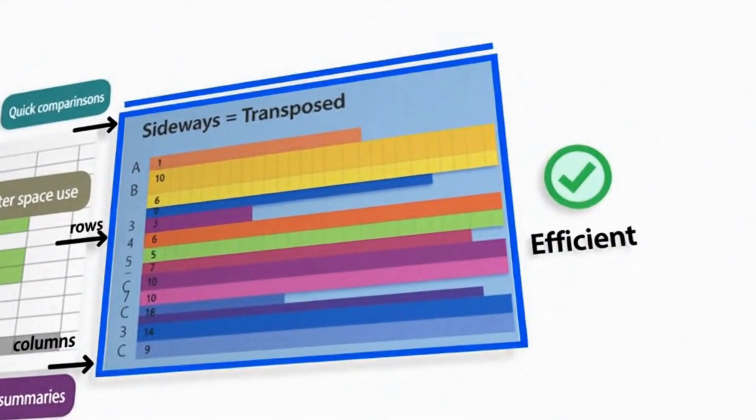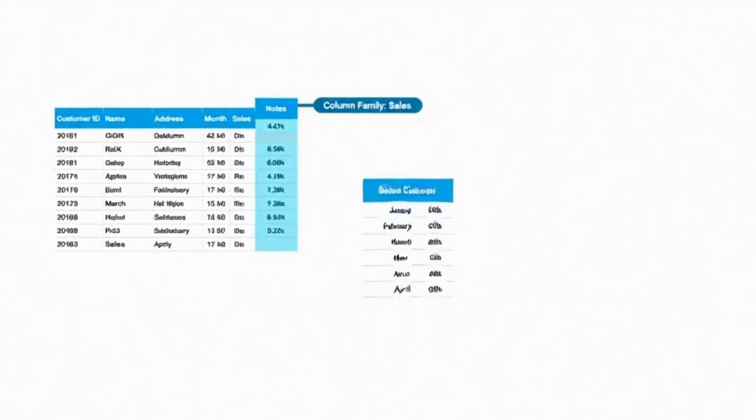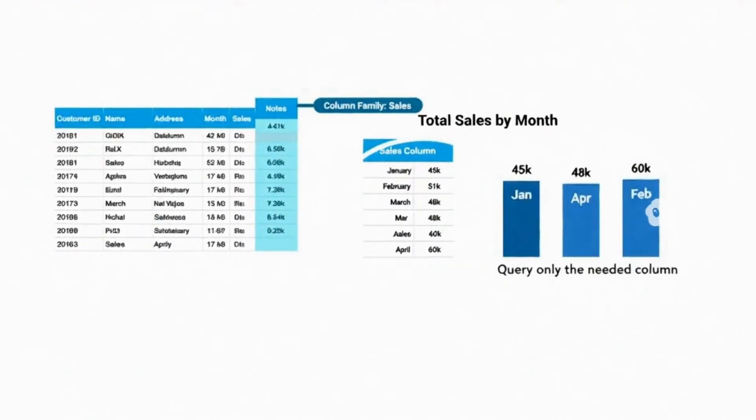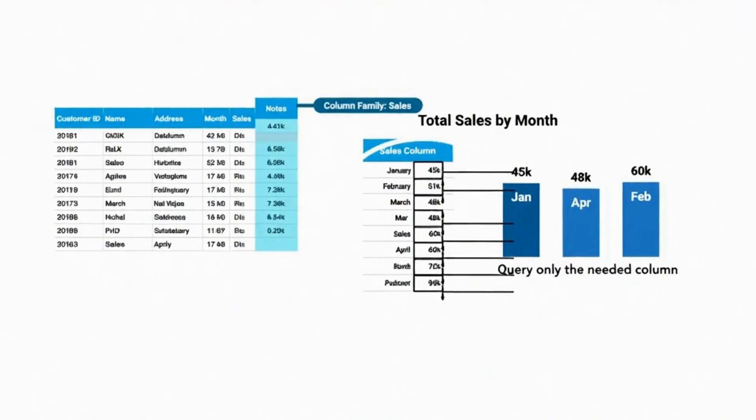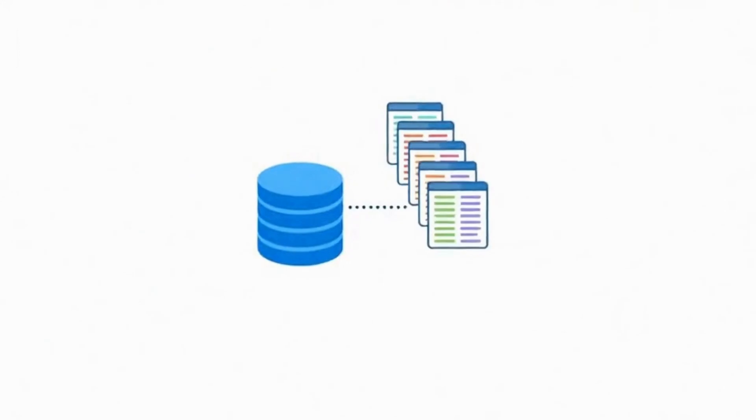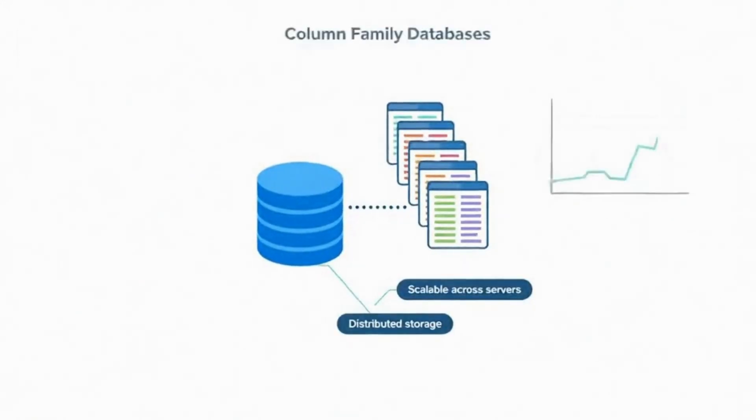Think about analyzing sales data. If you want to find the total sales for each month, a Column Family database can quickly grab just the sales column without looking at customer names, addresses, or other irrelevant information.